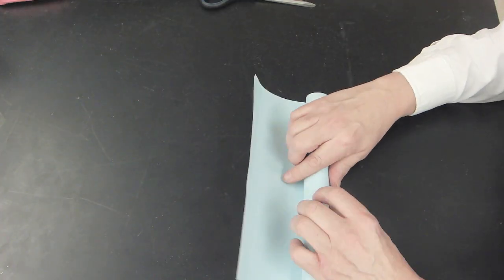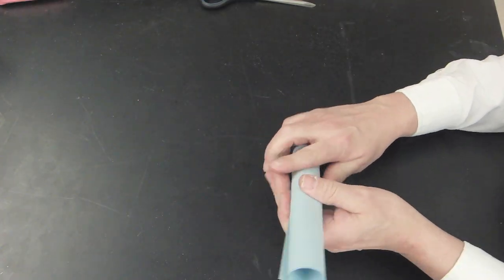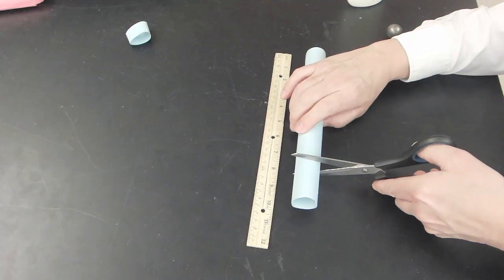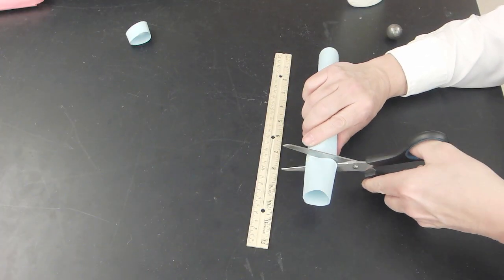This version is made out of heavy stock paper that's glued into a tube that's slightly larger than the ball that's fitting inside of it. The tube is cut to length. In this case, it's seven inches.